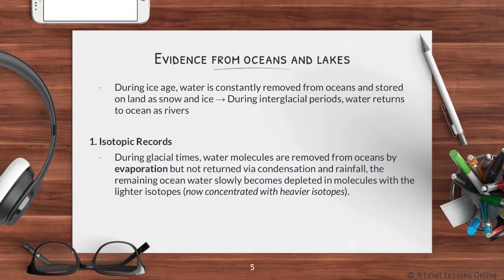Evidence from oceans and lakes: basically during the ice age, water was constantly evaporating from the oceans and then condensing on land in the form of snow and ice. During your interglacial periods — the warmer periods — water would return to the oceans as rivers because the water on land had melted. This phenomenon of heating and cooling, melting and freezing, causes certain things to develop.